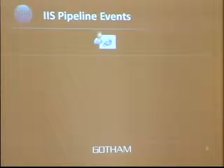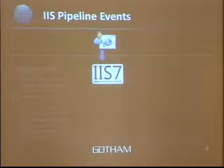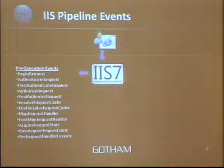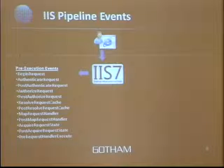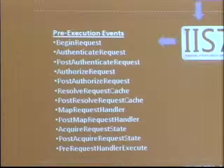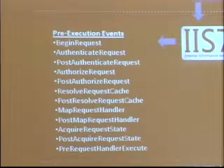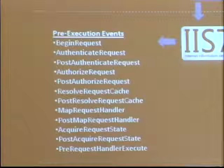Every module has the ability to hook into one or more of the pipeline events in IIS7. When the user makes a request, the web server runs through all its events and hands control to whichever modules need to hook in, then takes control back. There are about 23 events in all — the same events from the .NET world you can hook into with your global ASA file. You've got pre-execution events, then the handler executes (PHP DLL for PHP, ASP DLL for classic ASP), then post-execution events.